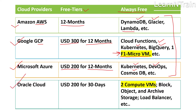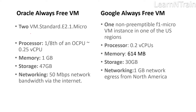The next one is Oracle Cloud — they provide $200 USD in their free tier, but only for 30 days. However, there is a big difference in their always free tier: they are providing two compute virtual machines, block storage, object storage, archive storage, load balancer, and also a database. So we see that two of the top cloud providers are giving us free virtual machines. Let us now compare the virtual machines of Oracle and Google.